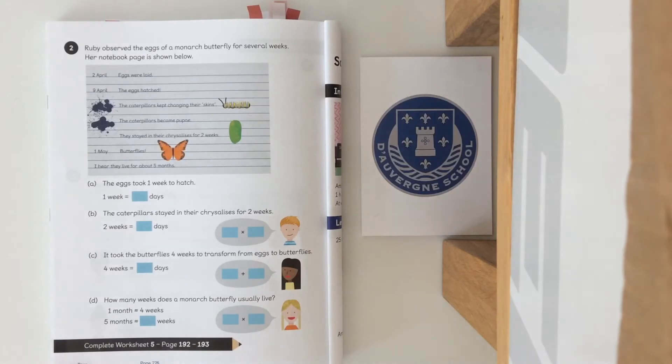Question A says the eggs took one week to hatch. One week equals how many days? Question B: the caterpillars stayed in their chrysalises for two weeks. Two weeks equals how many days?